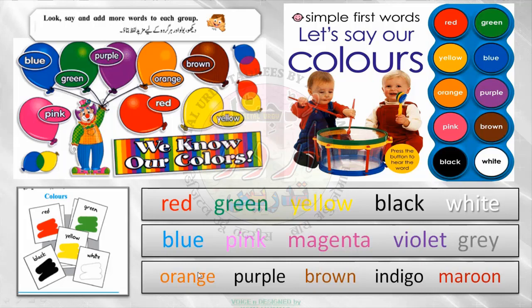Let me read once and then you repeat after me: red, green, yellow, black, white, blue, pink, magenta, violet, gray, orange, purple, brown, indigo, maroon. Very good! So this is the group of colors. Shall we go to the next group? Yes, of course we must go.